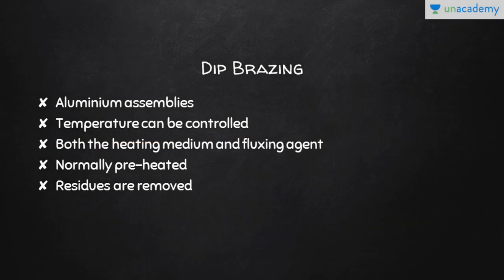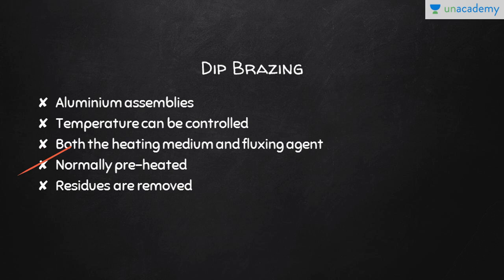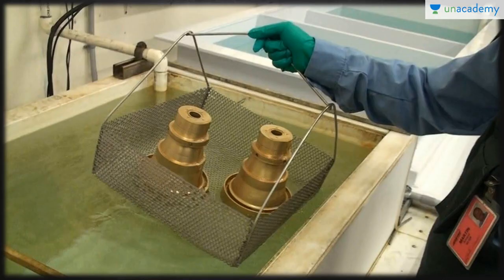Dip brazing is used on aluminium assemblies since the temperature of the molten flux bath can be controlled. The molten bath serves as both heating medium and fluxing agent. Uniform heating to brazing temperature is achieved rapidly. Parts are cleaned, assembled, and held together in fixtures. Parts are normally preheated before immersion, and residues are removed after brazing to prevent corrosion. You can see the picture of dip brazing here, where the technician dips the components into the dip furnace used for brazing.